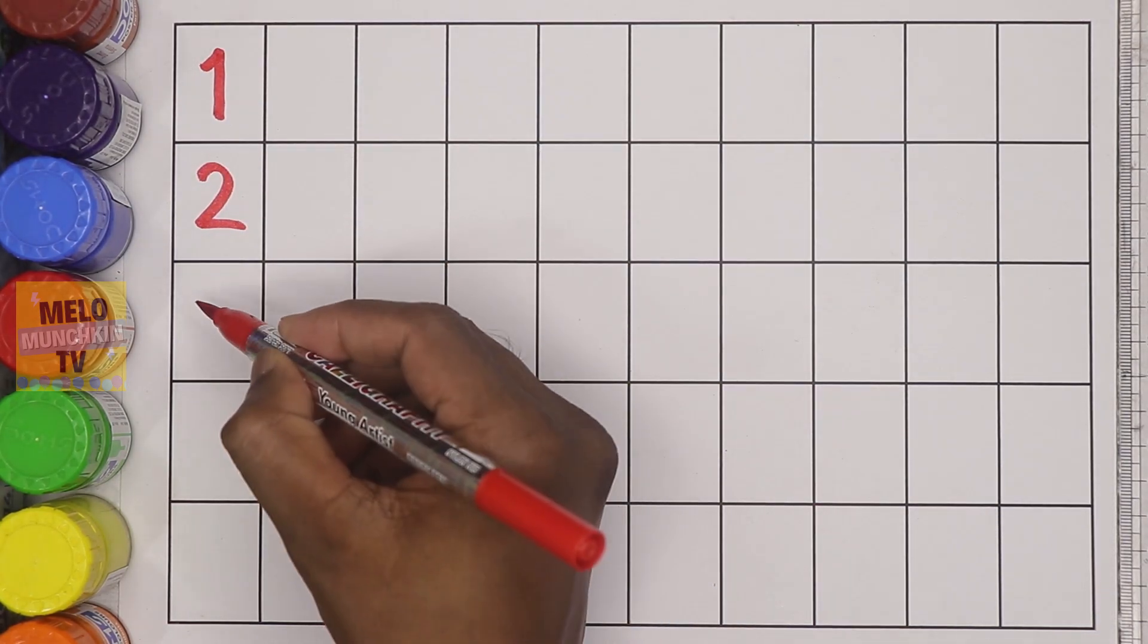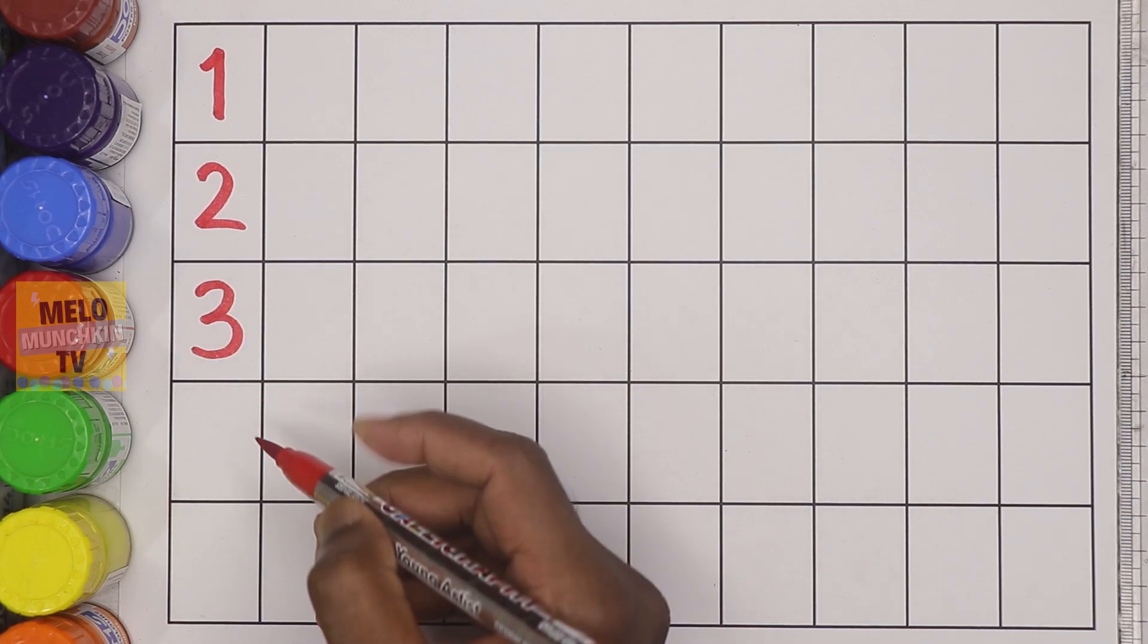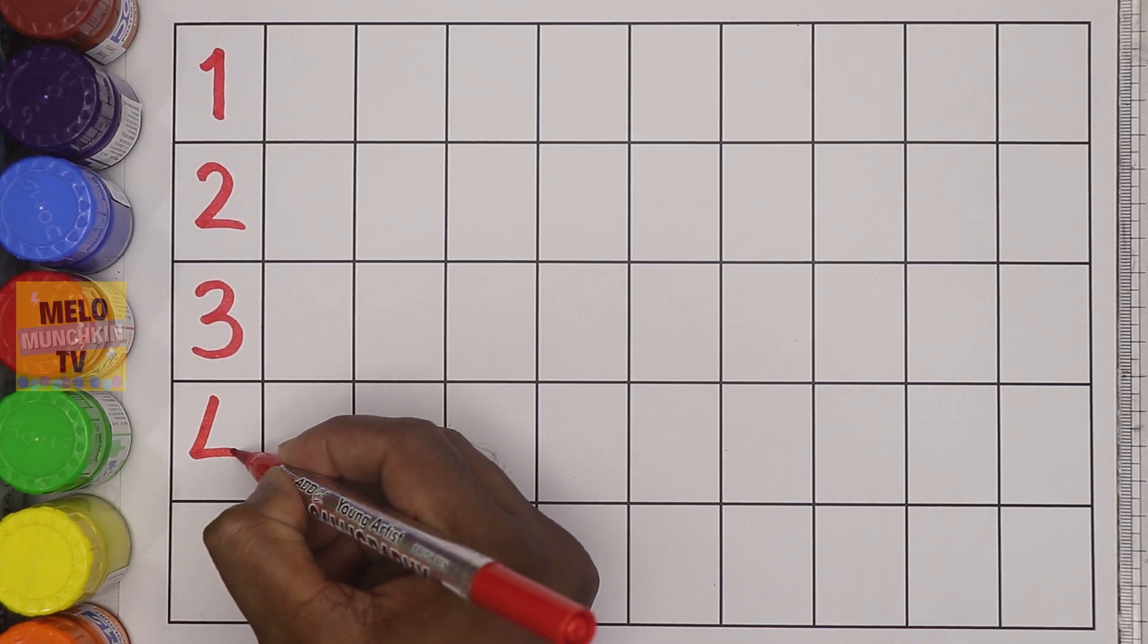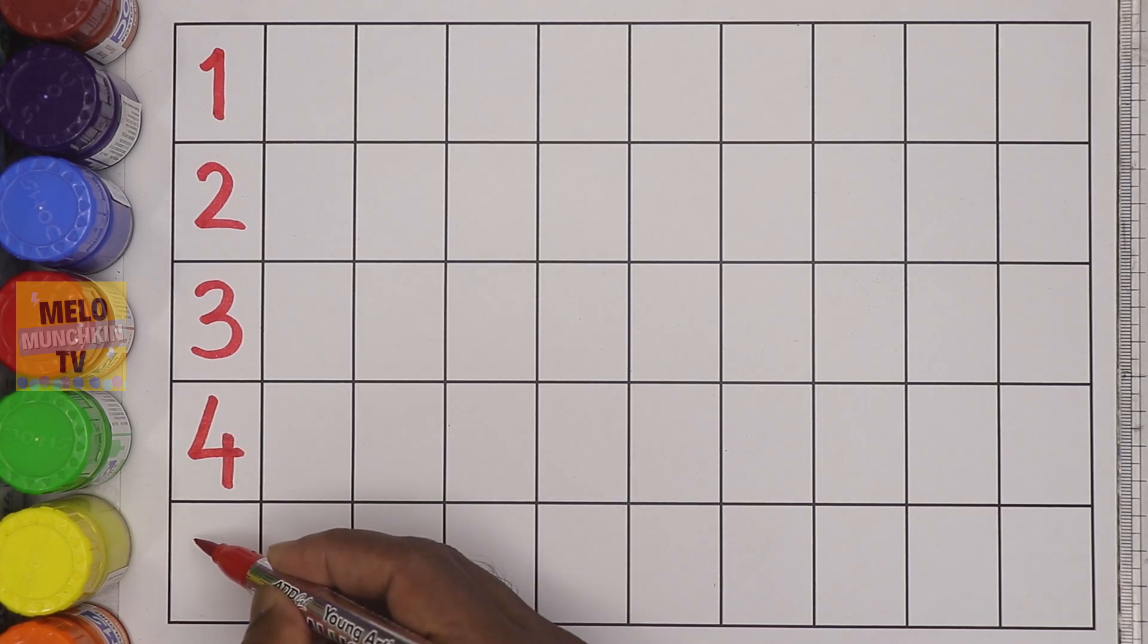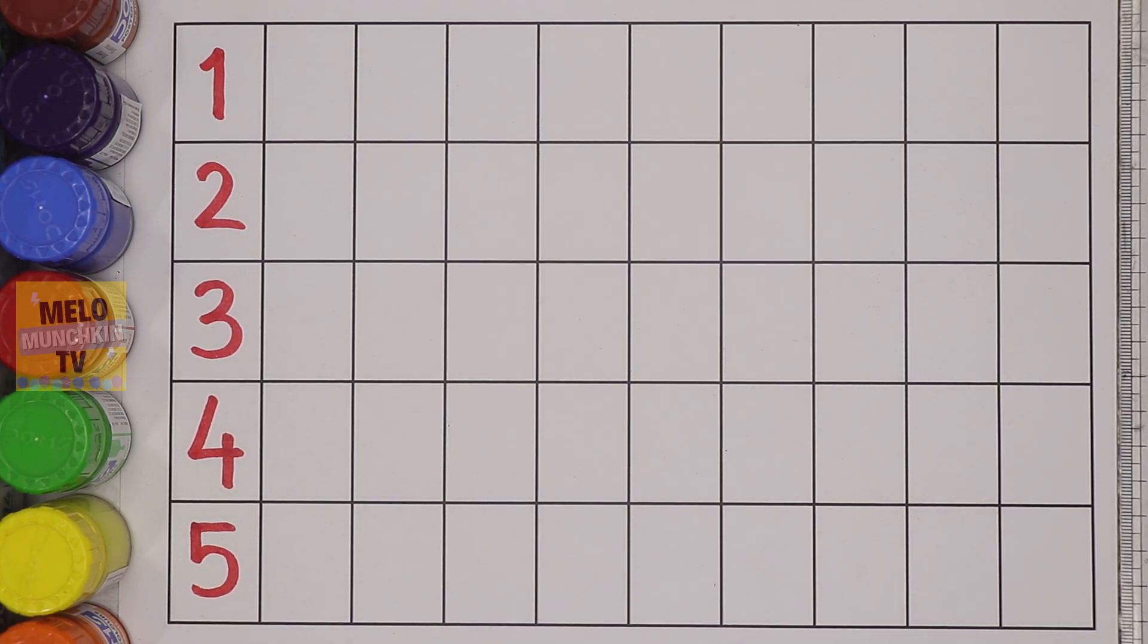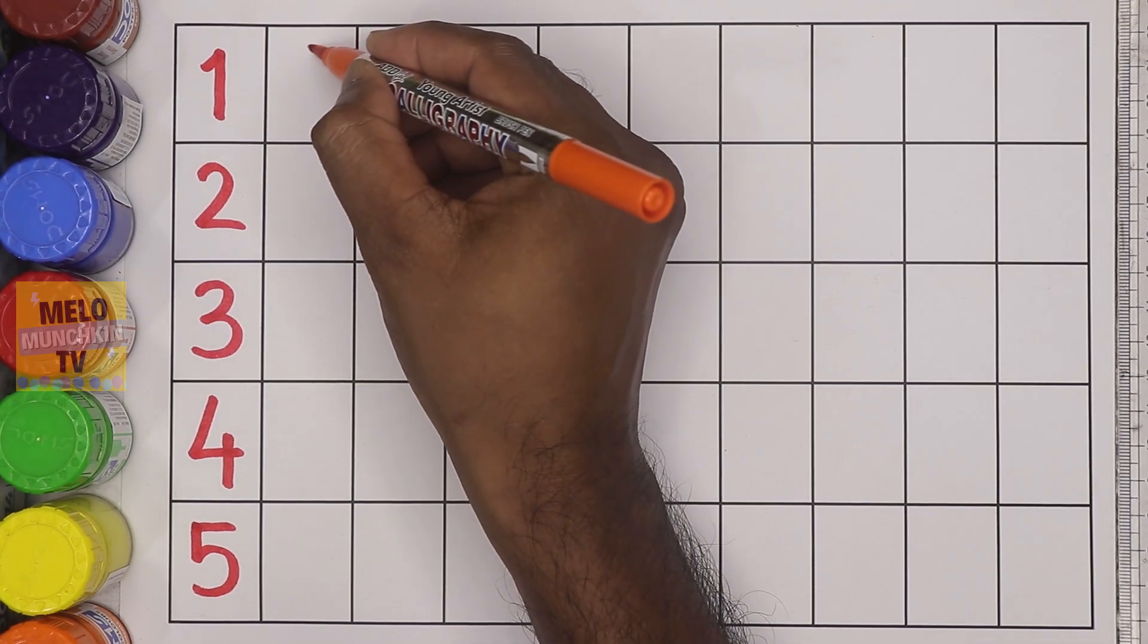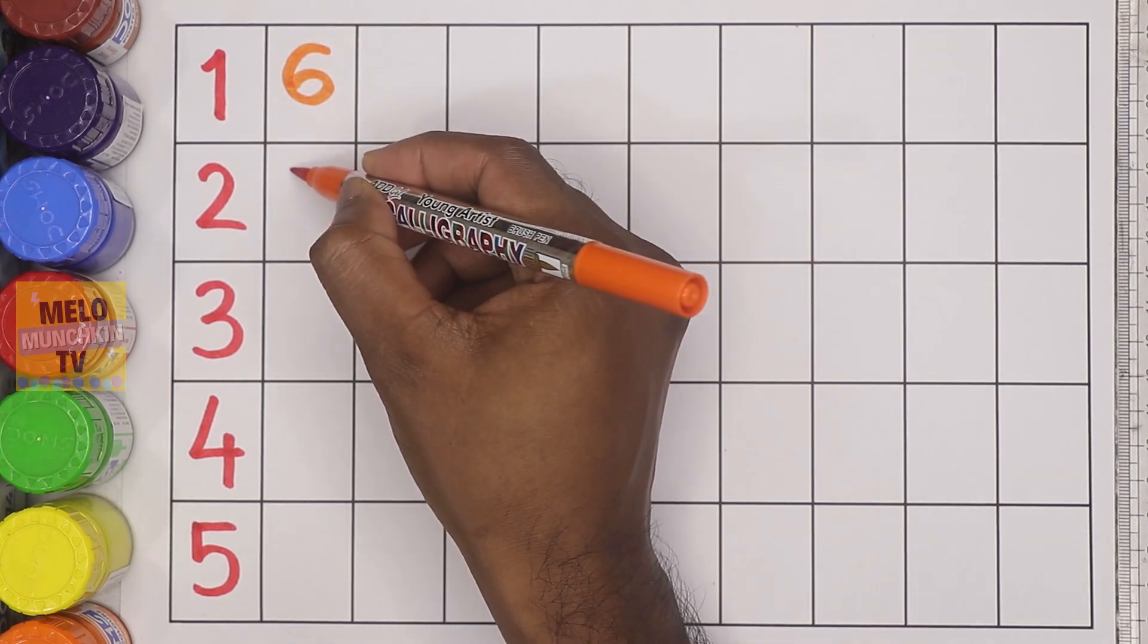two, three, four, five. Next I'll take orange color and write the second line. So after five: six, seven